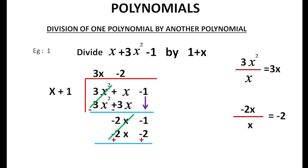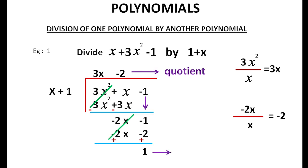Minus 1 plus 2 gives plus 1. Here we have quotient 3x minus 2 and remainder 1. Here we divided a quadratic polynomial by a linear polynomial.